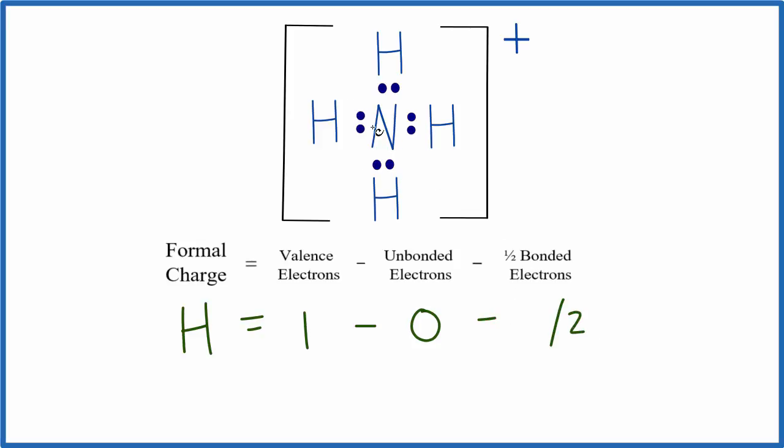So we have two here, we'll divide that by two, and the formal charge, one minus zero minus one, is zero. So the formal charge here on the hydrogen is going to be zero. That will be the same for each hydrogen here as well, because they're symmetrical.